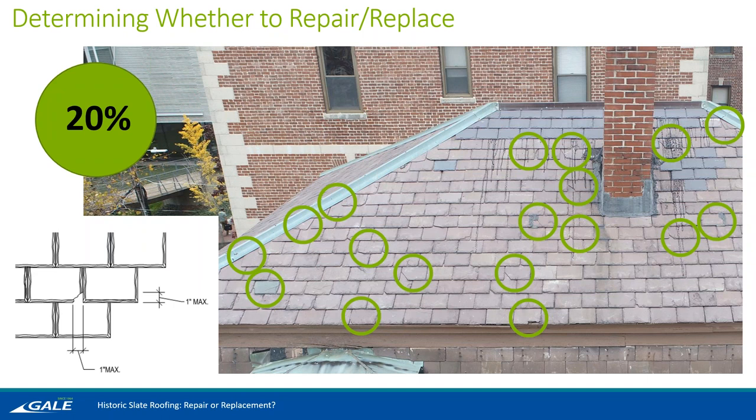A lot of the slate defects we commonly see are chips at the corner. Typically anything larger than an inch by an inch is something that you would want to replace, because any larger chips start to run the risk of water being able to travel into that lower course of slate below. Potentially that water can find its way to fastening holes or between the joints in the slate and eventually find its way into your building interior.